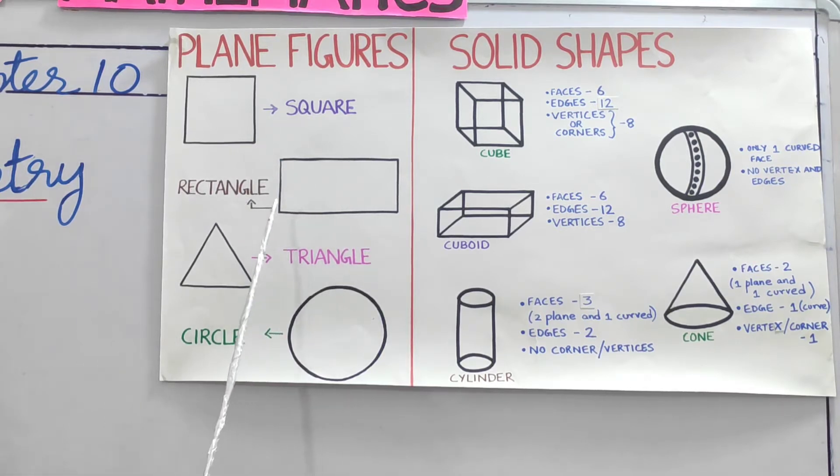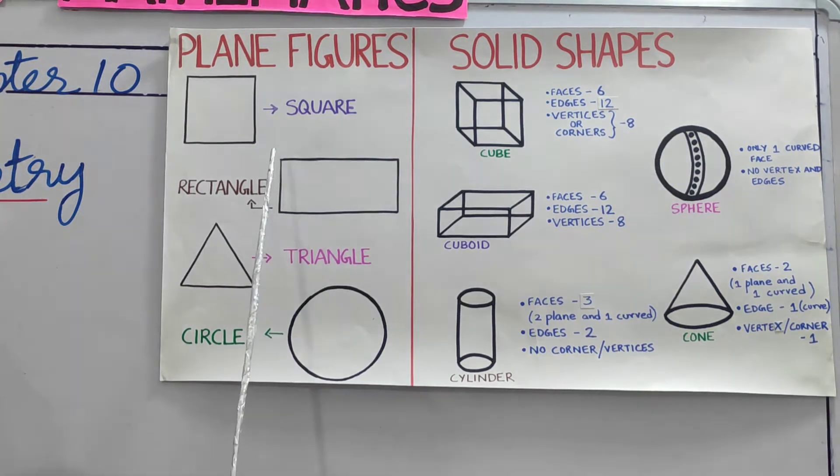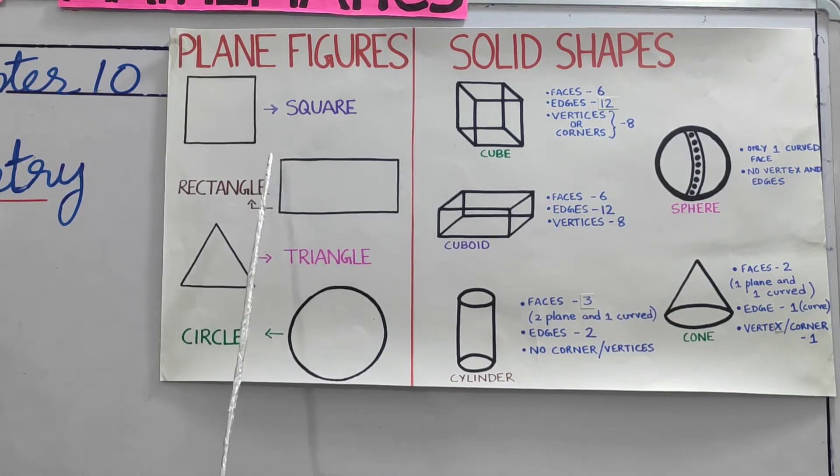The next one, Rectangle. It has also four sides. The opposite sides of a rectangle are equal. It has four corners.